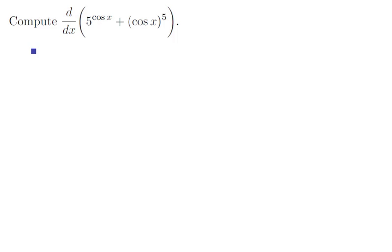Compute the derivative of 5 to the cos x plus cos x to the 5. So let's begin by prepping this function. This is really 5 to the power of cosine of x plus the quantity of cosine of x raised to the 5th power.